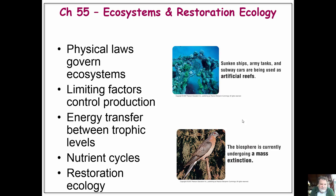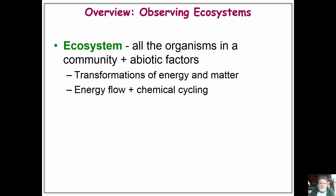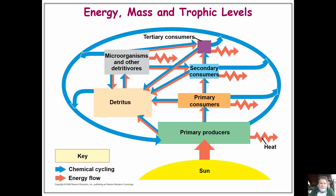We talked about limiting factors in populations as well. We'll also talk about energy transfer between the different trophic levels, nutrient cycles, and some highlights of restoration ecology. You'll largely be going through this one on your own. An ecosystem is basically all the organisms in the community plus the abiotic factors — that is everything else — looking at everything in roughly a small to large area. We'll talk about transformations of energy and matter, energy flow, and chemical cycling.